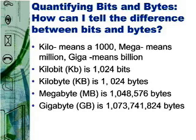The prefix mega means a million, or in the context of bits and bytes, precisely 1,048,576 — the equivalent of 2 to the twentieth power. A megabit is abbreviated as Mb, and a megabyte is abbreviated as MB. Megabytes are often used when referring to the size of medium to large computer files or floppy disk capacity.